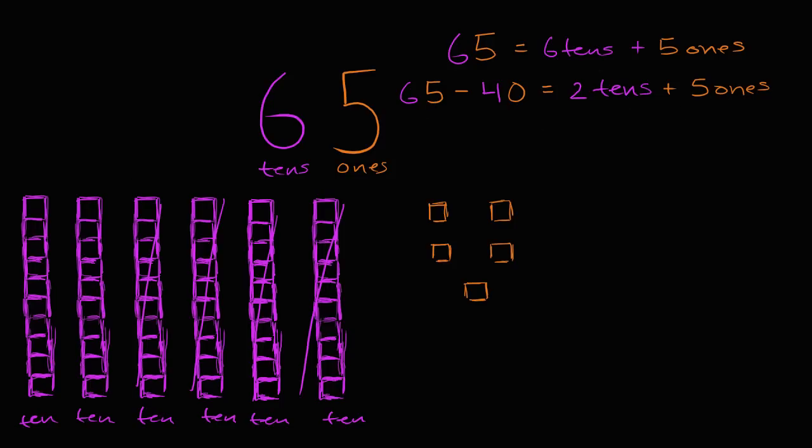And so what is this going to be equal to? So we can write 65 minus 40 is equal to, another way of saying two tens is by putting a two in the tens place, and then we have five ones, a five in the ones place. So two tens plus five ones, or 25.